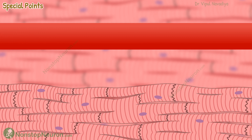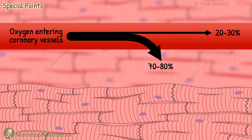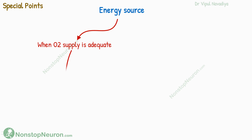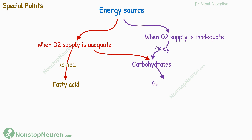Before the summary, here are some special points related to coronary circulation. First, even under resting conditions, cardiac tissues extract 70 to 80% of incoming oxygen, very high compared to the average extraction ratio of about 20 to 30%. So when oxygen demand is increased, the only way to increase delivery is by increasing blood flow. Second, when oxygen supply is adequate, cardiomyocytes mainly use fatty acids as their primary source of energy — 60 to 70% of energy comes from fatty acids. However, under anaerobic conditions, glycolysis of carbohydrates becomes important and produces a large quantity of lactic acid, which may cause pain in case of myocardial ischemia.